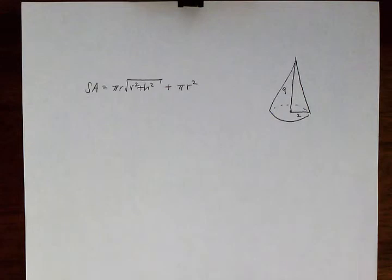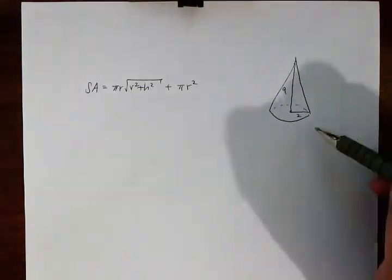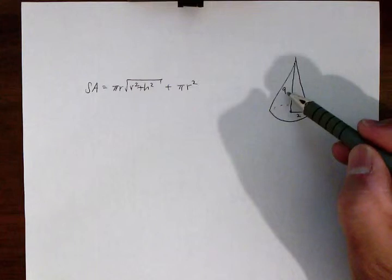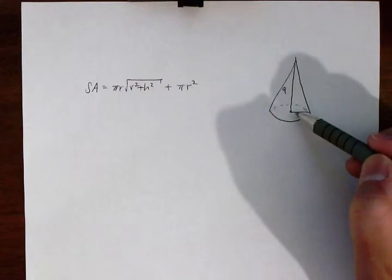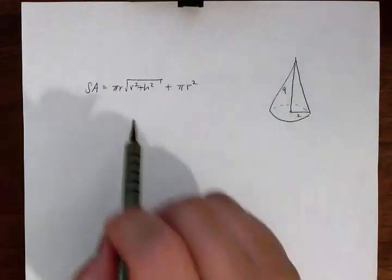Okay, so in this problem we're going to find the surface area of a cone. We drew a picture of a cone - in this case the height is 9 units and the radius of the base is 2 units. The surface area formula is given to us as the following.